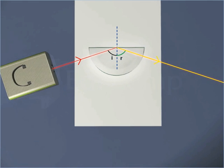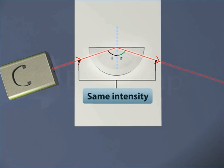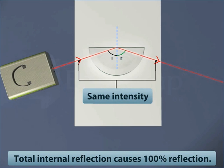Also, the reflected rays and the incident ray both have the same intensity. Thus, total internal reflection causes 100% reflection.